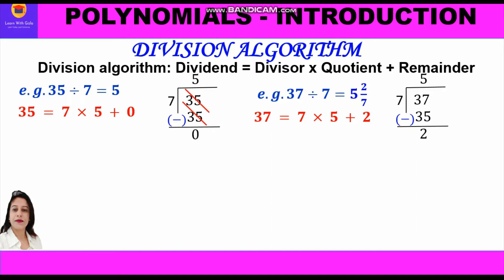We write 37 equals 7 into 5 plus 2 — that is 37 is the dividend, 7 is the divisor, 5 is the quotient, and 2 is the remainder. Naturally the left hand side equals the right hand side because 7 into 5 plus 2 is also 37.